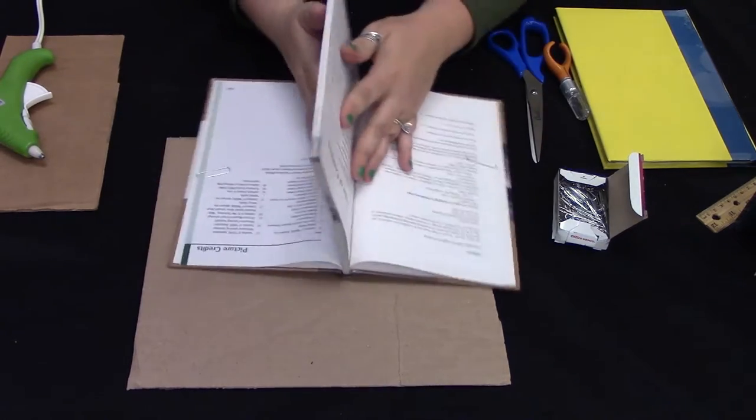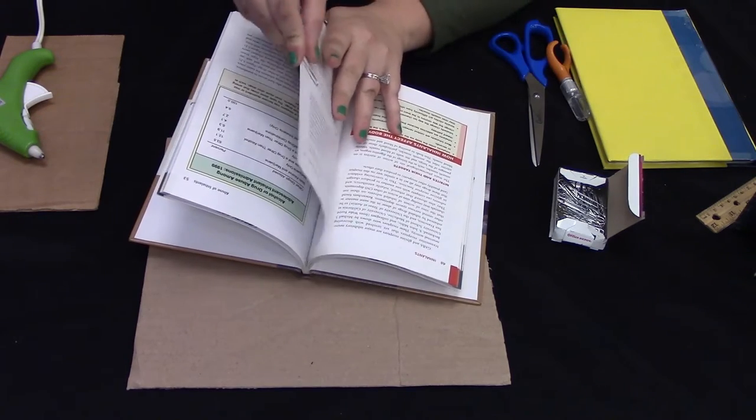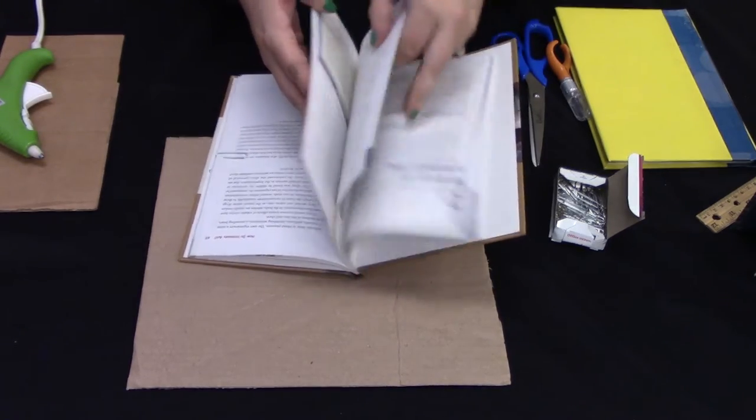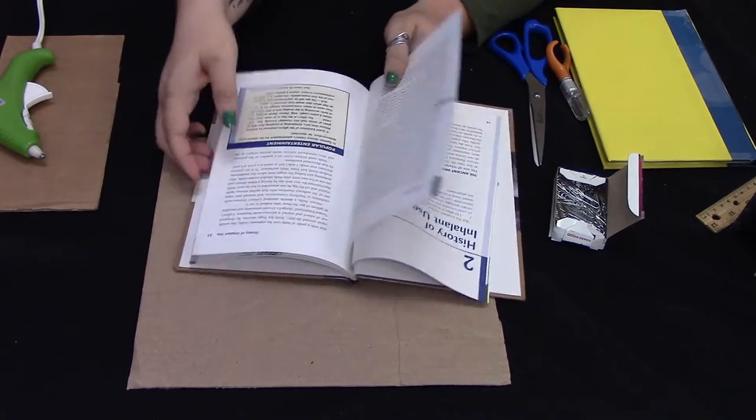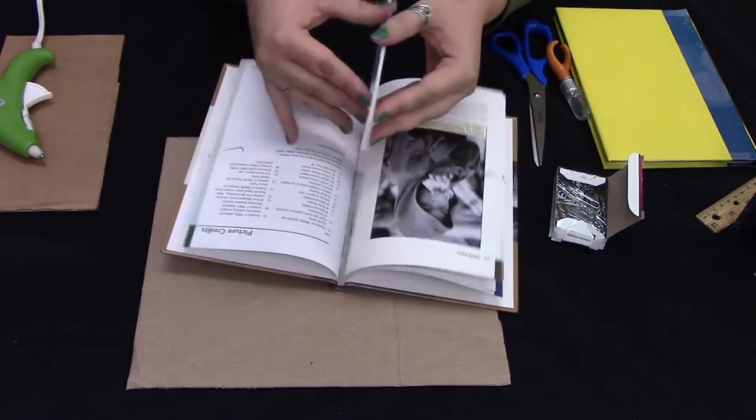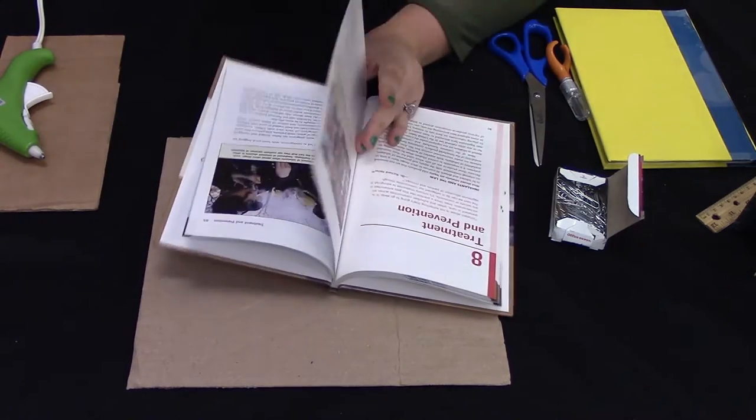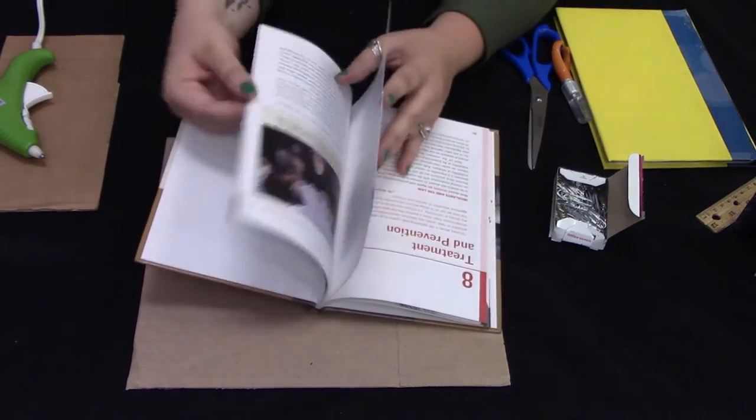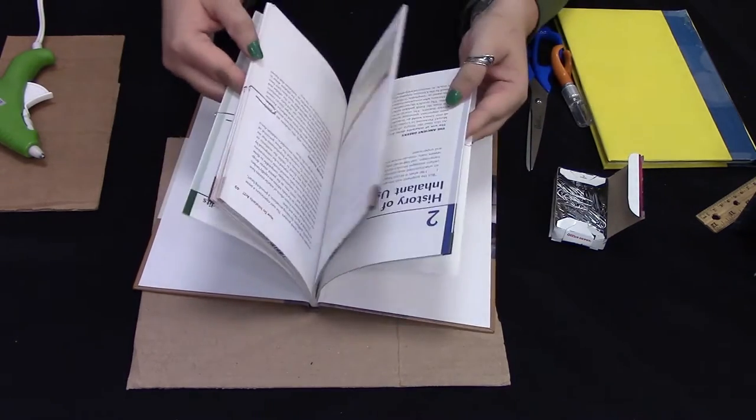And then we can find roughly the middle. We'll use that one as one of our dividers and then we'll do one roughly in the middle of those sections, and then one in between the middle and the front of the book. By using paper clips or binder clips to keep these pages together, that's going to help us envision where our folder pockets are going to be.